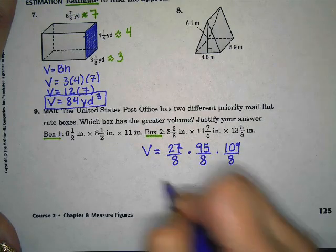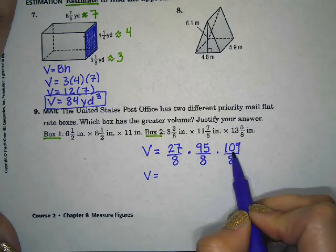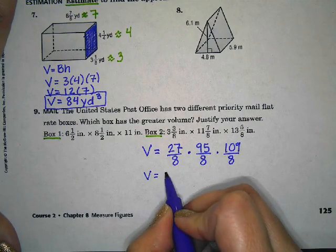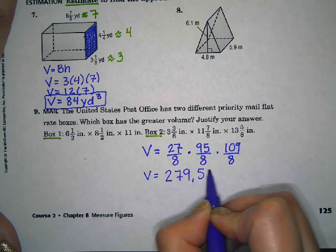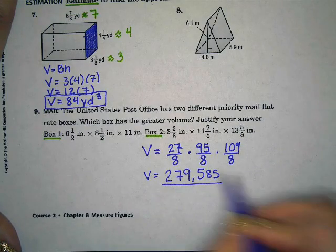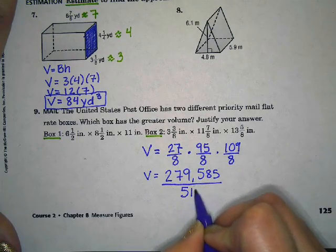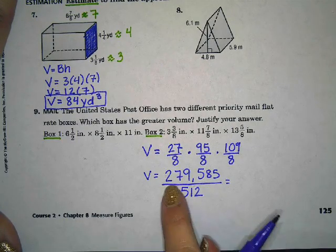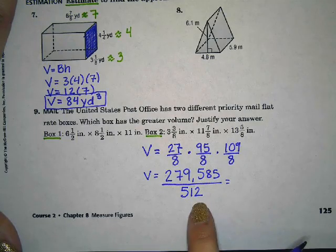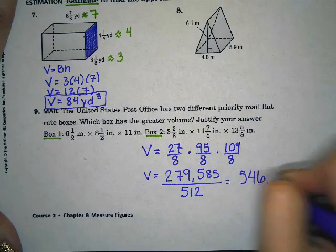So our volume is going to be equal to these three dimensions multiplied. So first change them to improper fractions. When I multiply that out, my volume is 27 times 95 times 109. I used a calculator for that and got 279,585. On the bottom I get 8 times 8 times 8, which gives me 512.